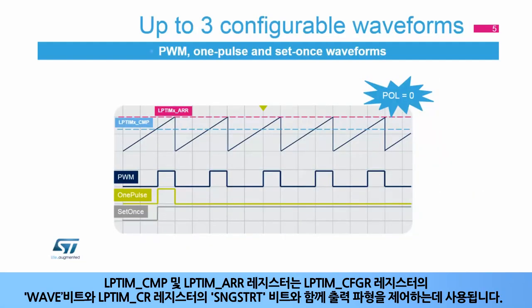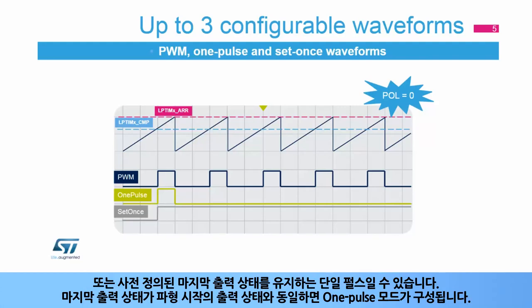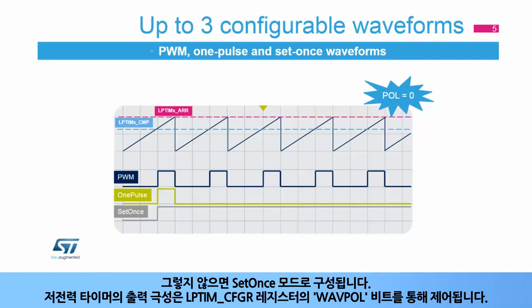The LP-TIM-CMP and LP-TIM-ARR registers, in conjunction with the WAVE bit field from the LP-TIM-CFGR register and SNG-STRT from the LP-TIM-CR register, are used to control the output waveform. The output waveform is either a typical PWM signal with its period and duty cycle controlled by the LP-TIM-ARR and LP-TIM-CMP registers respectively, or it is a single pulse with the last output state defined by the configured waveform. If the last output state is the same as at the waveform's beginning, then one pulse mode is configured; if not, then set once mode is configured.